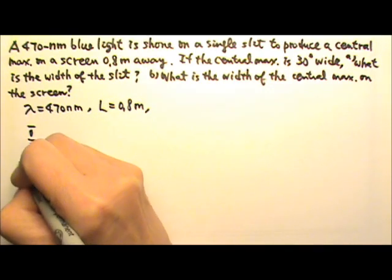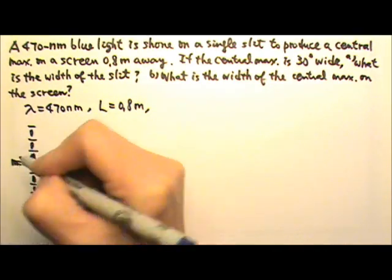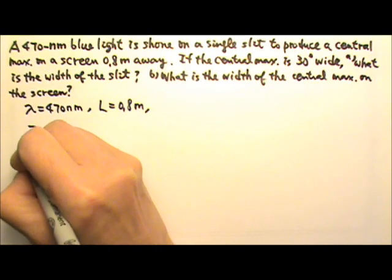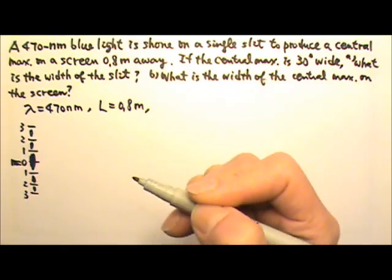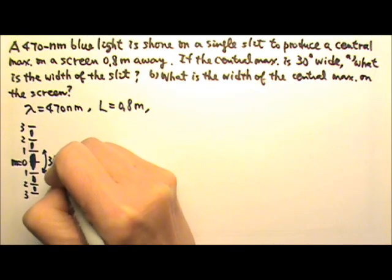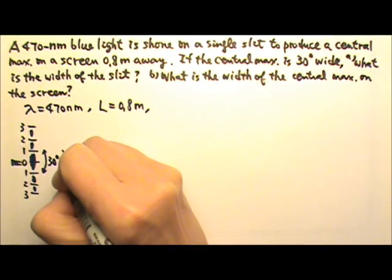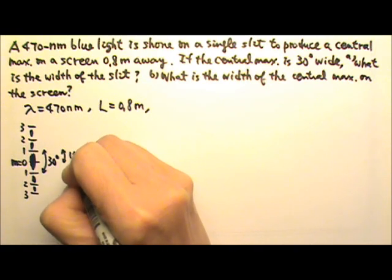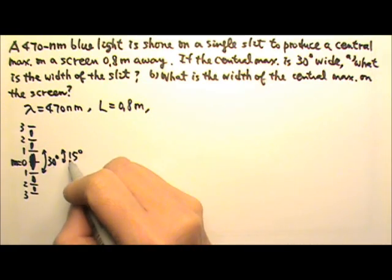And at the center, the m equals to 0, and then this next one will be 1, 2, 3. 1, 2, 3. The central maximum is 30 degrees wide. That means to the center of the screen, it is only 15 degrees wide, 30 divided by 2.